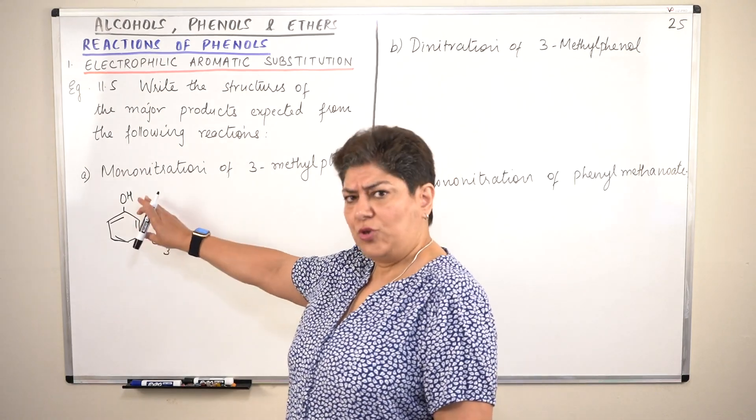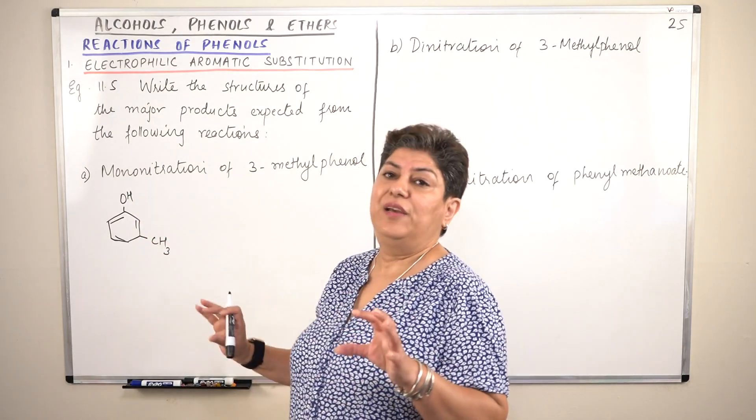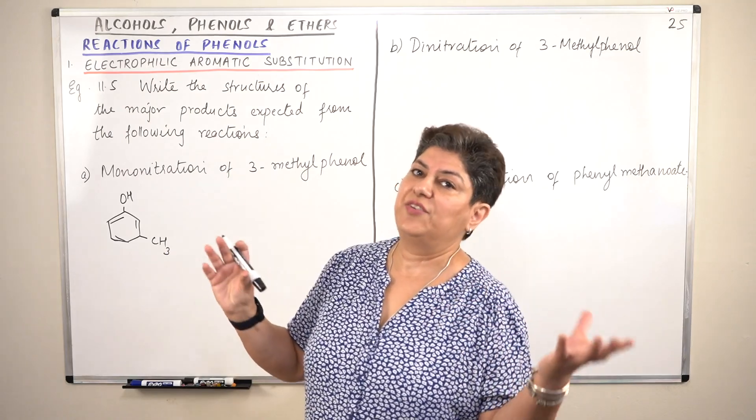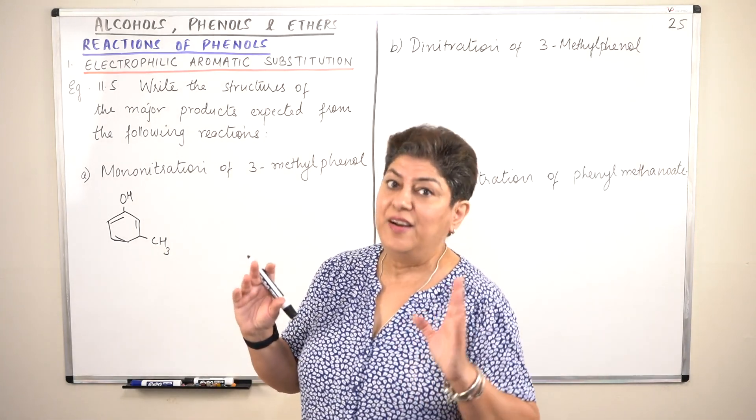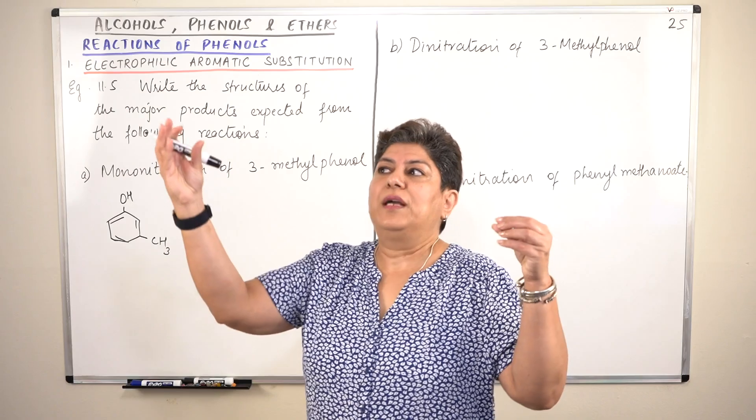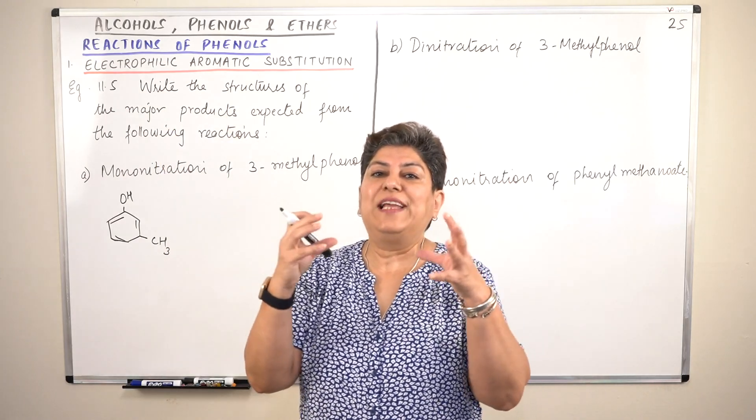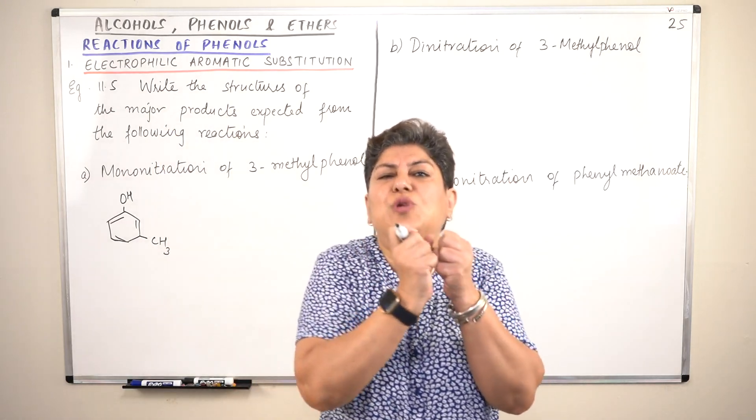Although methyl group is also ortho-para directing, here its main effect is going to be that of steric hindrance, that it is just present there. Therefore the incoming groups would not like the molecule to be too cluttered. They would not try to form a large group.